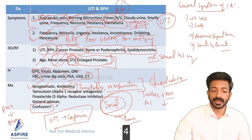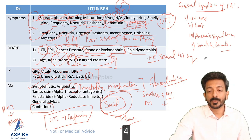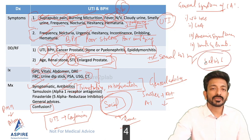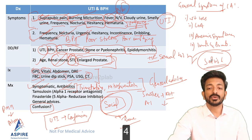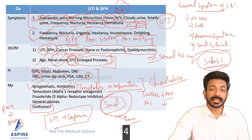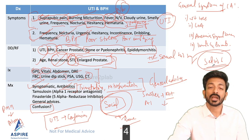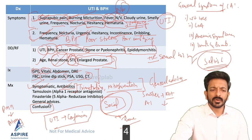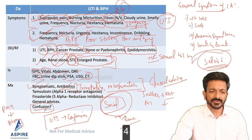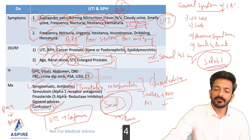If the patient goes into confusion, you may need to do Sepsis 6. Sepsis presents with high pulse rate, low blood pressure, high temperature, and low saturation. Sepsis 6 means take three things: blood culture, lactate via ABG, and urine output monitoring — and give three things: IV fluids, IV antibiotics, and oxygen. But in this current case the patient is fine with UTI only; we give the warning sign of confusion.